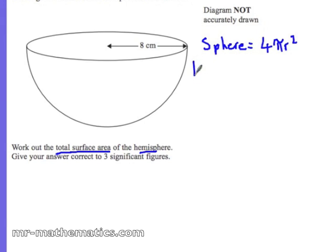So a hemisphere would be half of that in terms of the curved area. So that would be 4 pi r squared divided by 2, so 2 pi r squared.